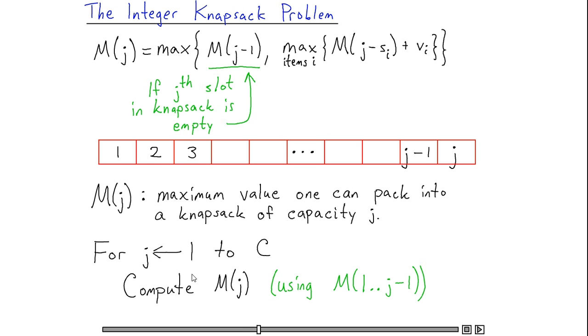If it turns out that the jth location in the knapsack ends up being empty in the optimal solution, then that means that the optimal way to fill this knapsack is going to be just to fill the first j minus 1 positions in the knapsack optimally. And this corresponds to the subproblem M(j-1).